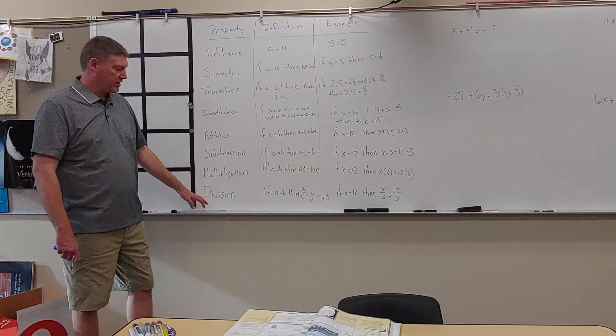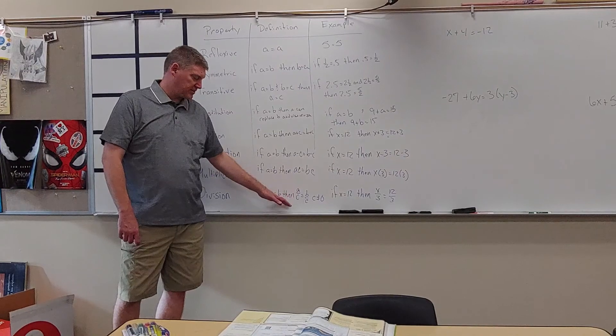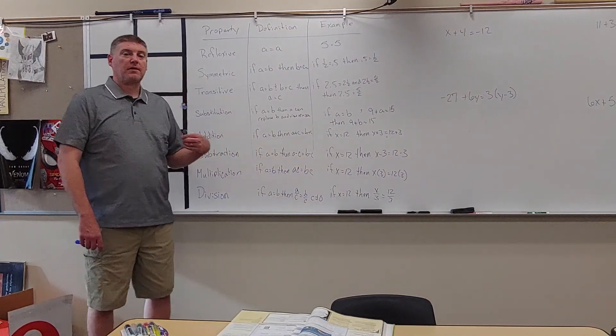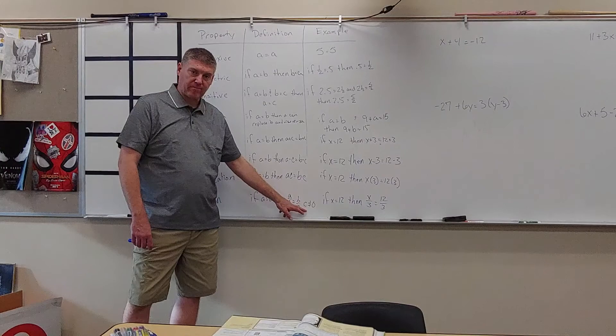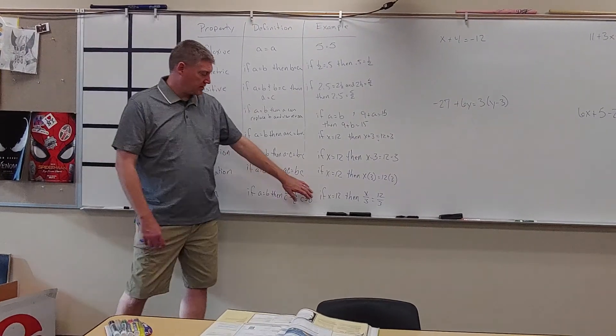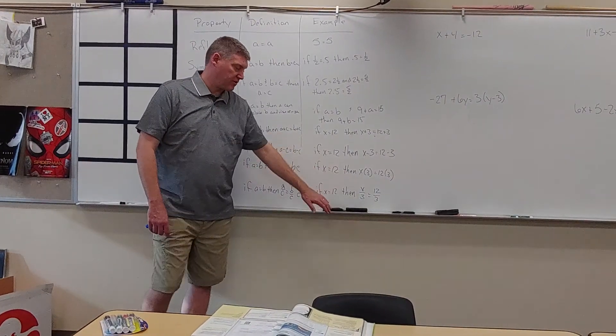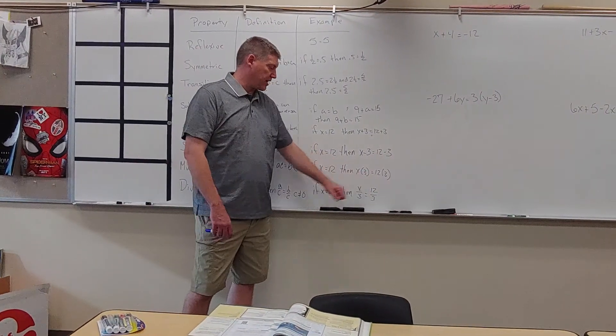And the last thing is division. If A equals B, then A over C equals B over C. But we have a constraint on C. C cannot equal 0, so we can't divide by 0. Our example is if X equals 12, then X over 3 equals 12 over 3. We're not dividing by 0.